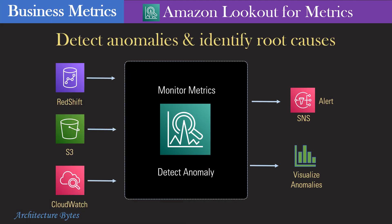Amazon Lookout for Metrics detects anomalies in business metrics using machine learning. It can group related outliers together and diagnose root cause. It can integrate storage services, SaaS applications, and databases to monitor metrics and take actions or generate alerts when outliers are detected.